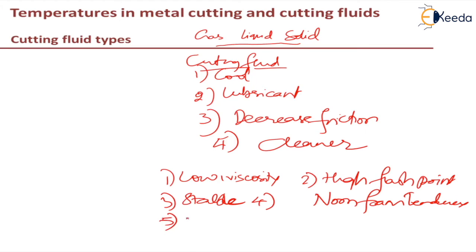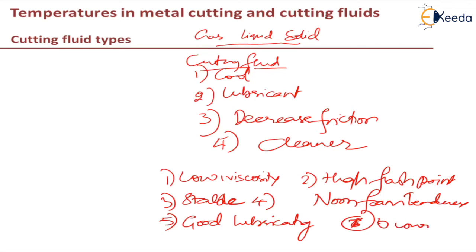The cutting fluid should have good lubricating properties. It should be chemically inert and odorless — it should not create any bad smell around the machine tool, as the operator works in that environment. It should also be harmless, meaning if the operator comes in contact with the cutting fluid, it should not harm the skin or any other parts. So the fluid should be odorless and harmless — these are the desirable properties of cutting fluid.